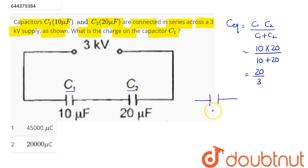So we can say here this is 20 by 3 microfarad capacitor connected to this 3kV supply. So 3kV means 3000V we can say here.